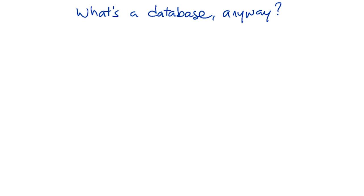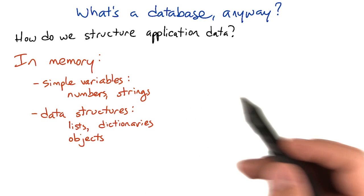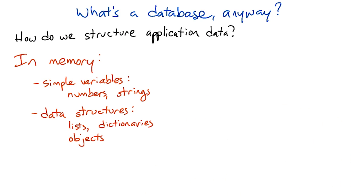When you've written code before, you've used data structures such as variables, lists, dictionaries, and objects. These all let you store information while your program is running. You can build up a complex data structure like a list of dictionaries of objects, and when your program exits, that structure will be gone from memory.